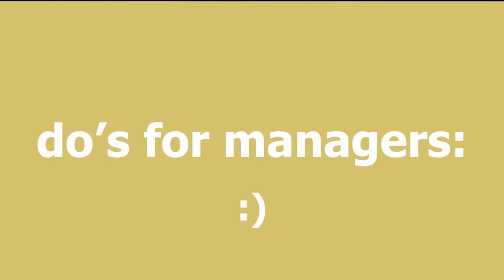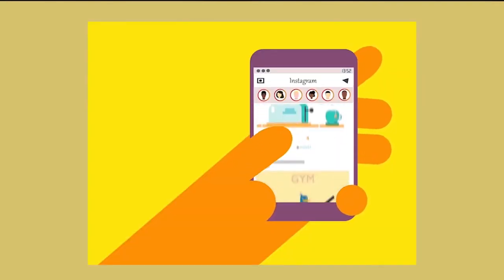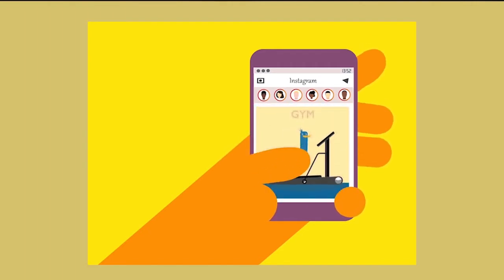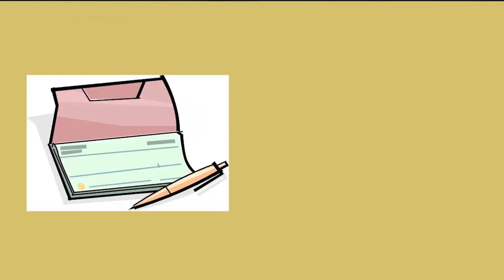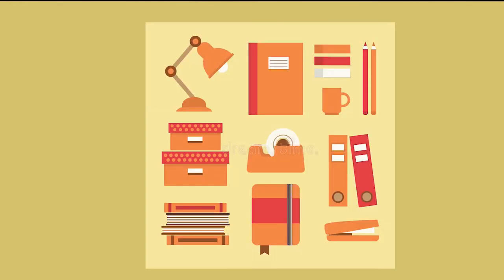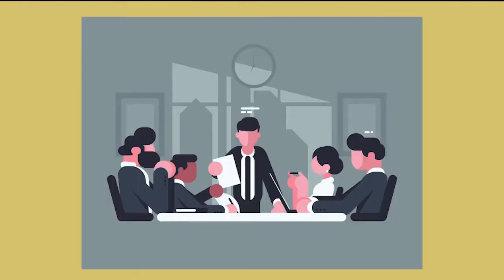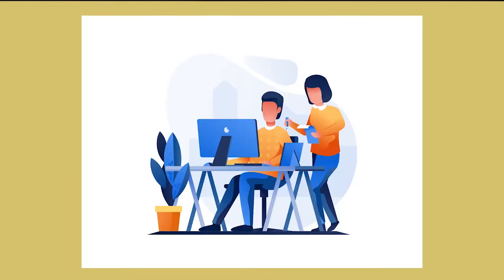Now we're going to talk about the do's and don'ts for directing, divided into sections for managers and teachers. For managers, what you should do is create social media to communicate with consumers and employees. You should also balance the income received with what is being put out — this can be done with checks or income sheets. Additionally, you should order new supplies, conduct meetings for discussion on improvements and achievements, orient employees in the right direction, refer back to higher authority, and provide reports weekly.